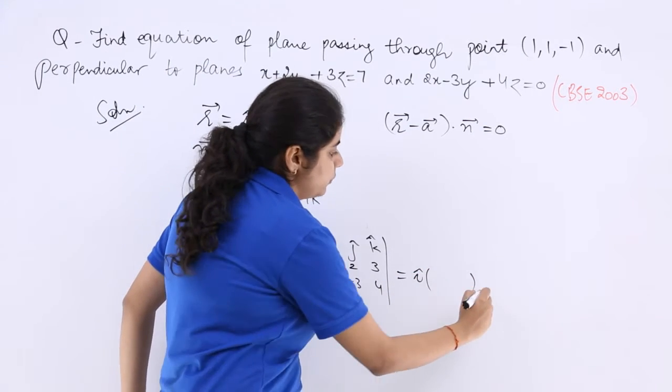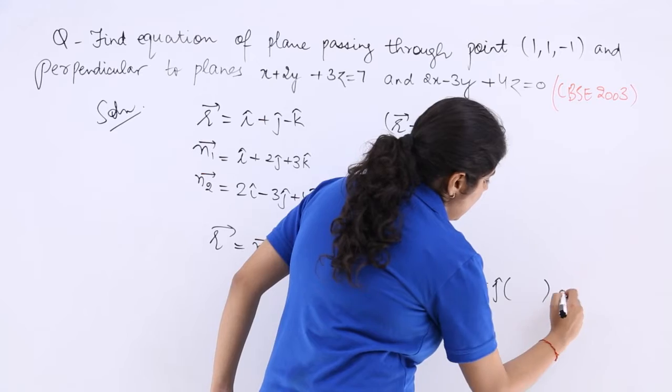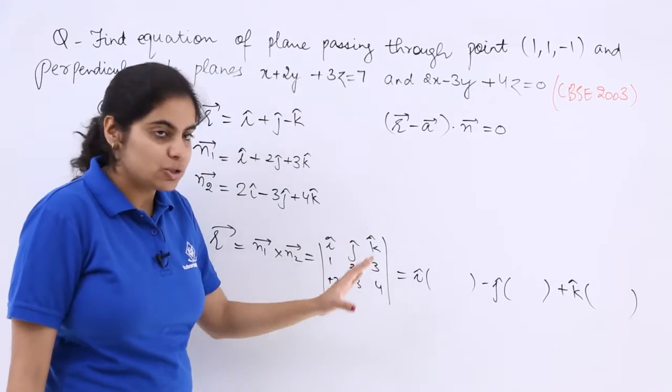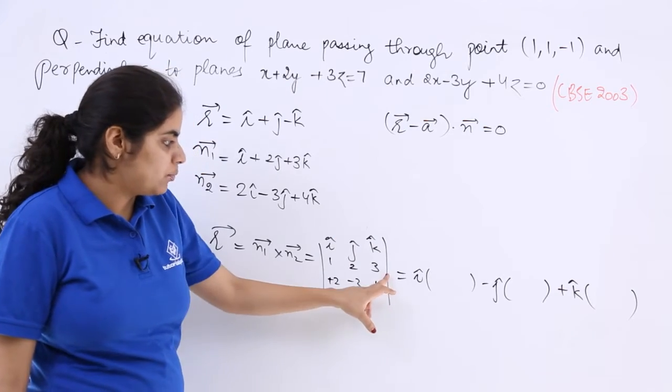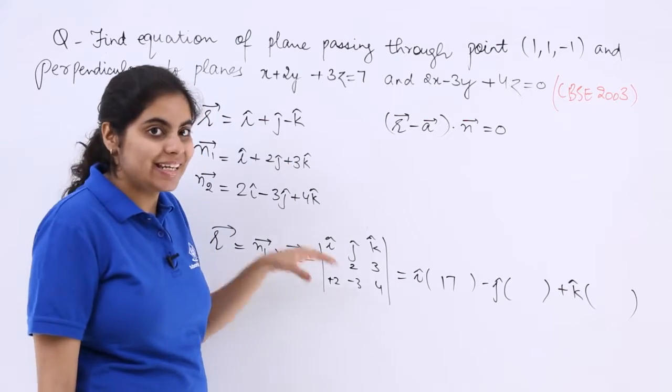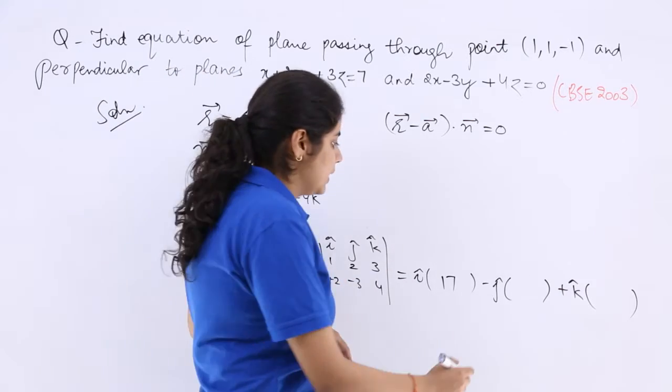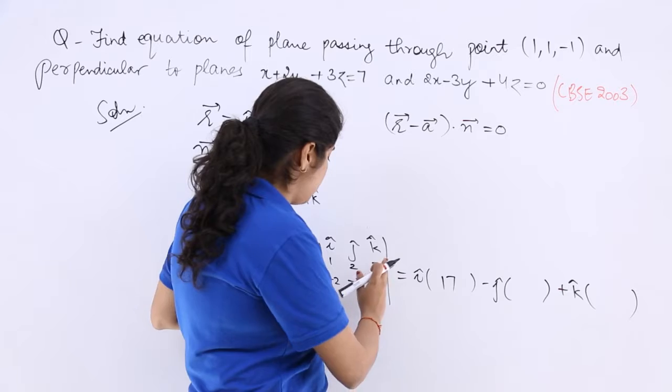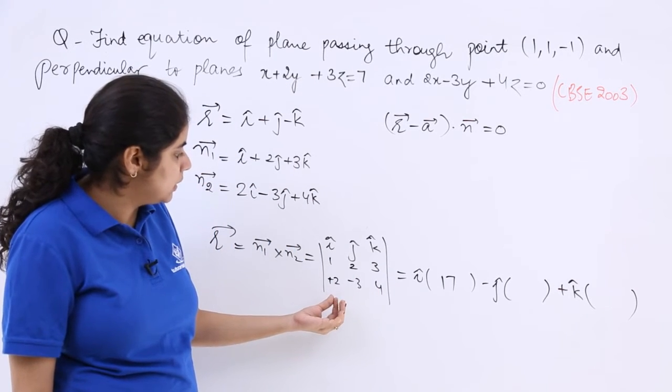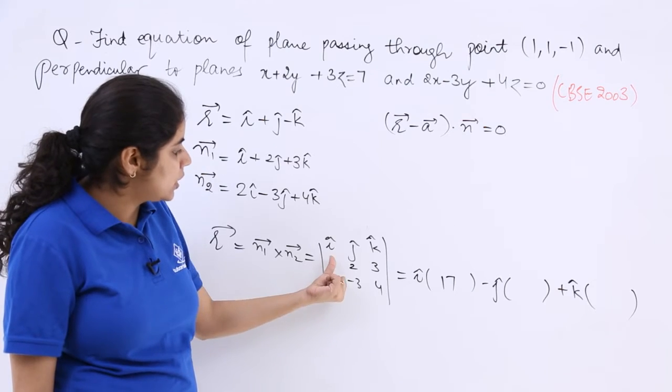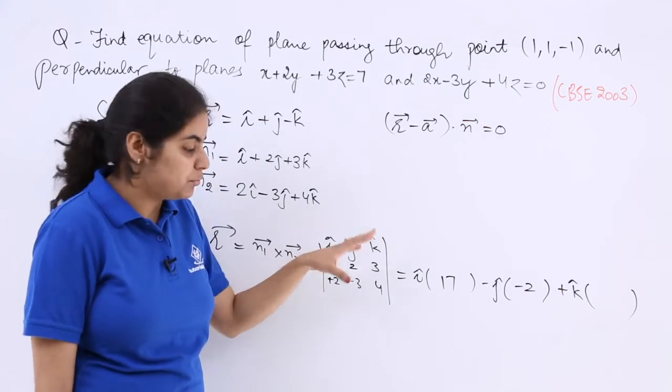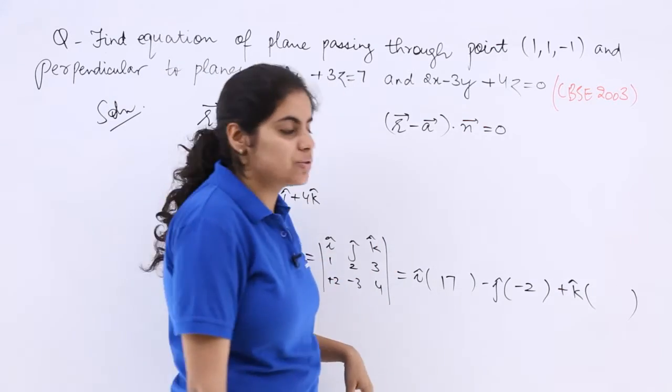This becomes i to one side, then minus j, and then plus k. Removing the first row and the first column: 8 plus 9 is 17. Minus j already outside; removing the second column and the first row: 4 minus 6. Let's check this again, 4 minus 6 is minus 2.